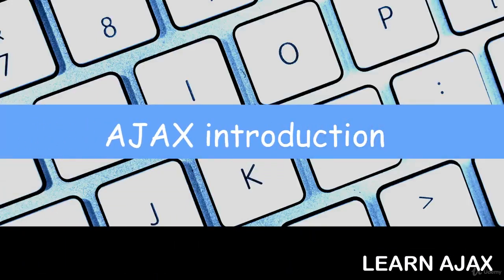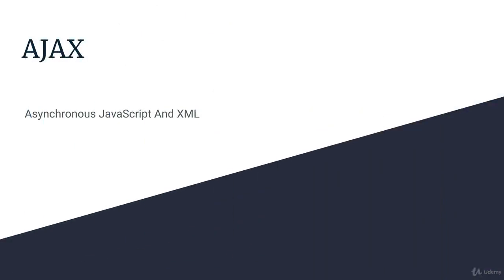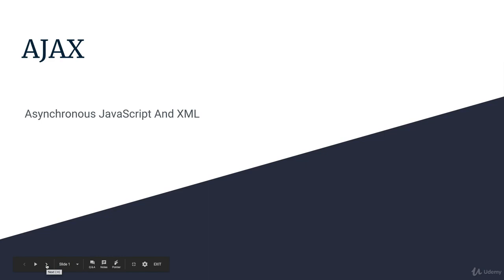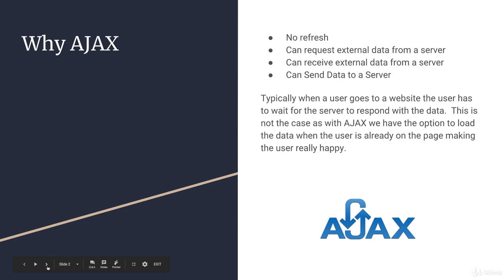Welcome to our Ajax introduction lesson. I'm going to give you a quick overview of what Ajax is and how you can use it within JavaScript. Ajax is short for Asynchronous JavaScript and XML. You're probably saying hold on — we've just been looking at JSON, which is more popular than XML for transferring data, but originally when Ajax was first conceived they were using XML. That's why XML stayed within the acronym, but most of the time we're now using JSON.